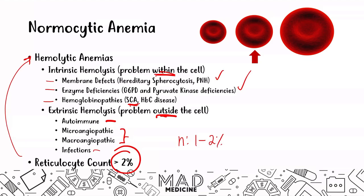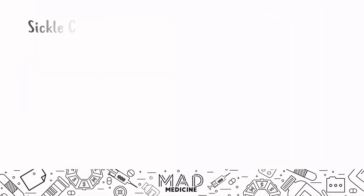Non-hemolytic normocytic anemias are going to have a normal reticulocyte count. With that said, let's discuss sickle cell anemia — a very important disease and a very high yield topic.